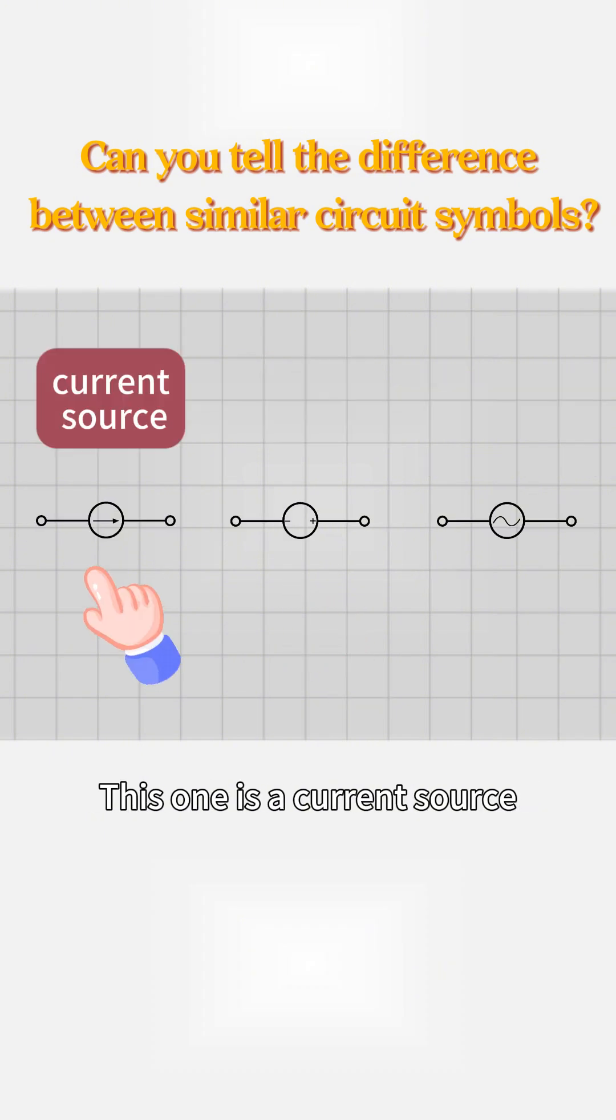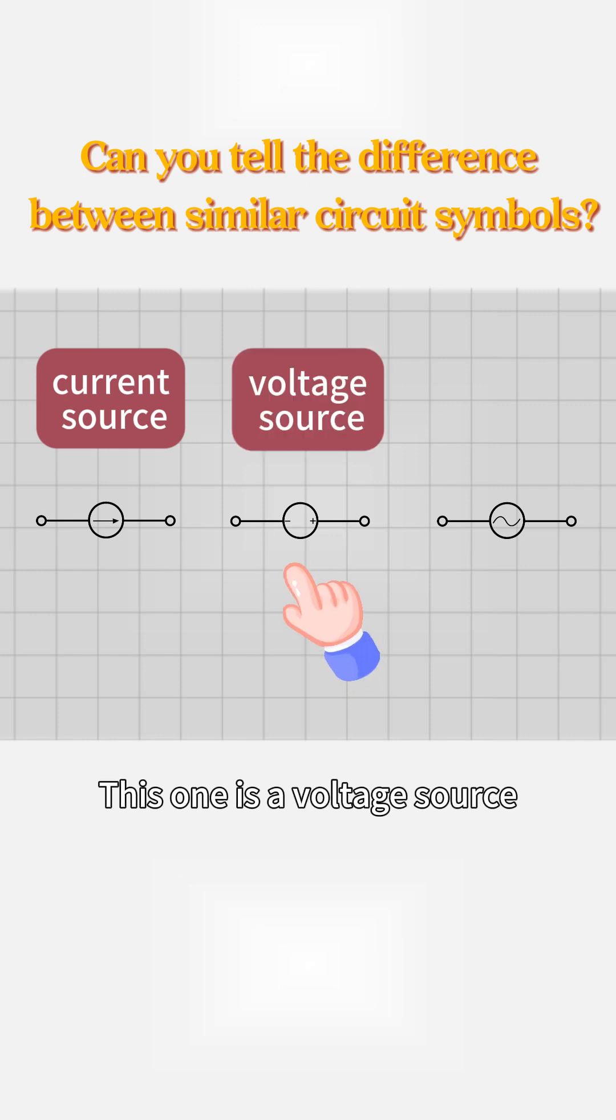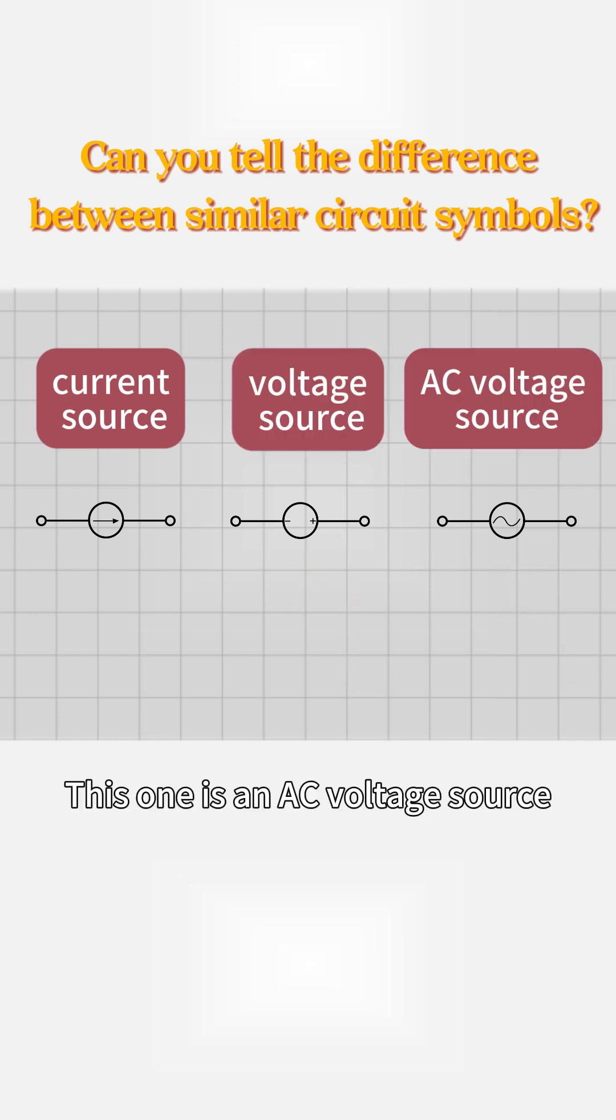Which one is a current source? This one is a current source. This one is a voltage source, marked with a wavy line. This one is an AC voltage source.